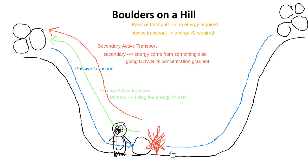If you've ever seen those desk toys where you pull one ball out to the side and it knocks into the balls next to it, and then the one on the other side bounces out and it clicks back and forth — that's Newton's Cradle. The balls move back and forth; when one hits the side, it causes the other to go up. If we don't get enough energy, one gets halfway up the hill, comes back down, hits the rock again, and it just keeps going back and forth.